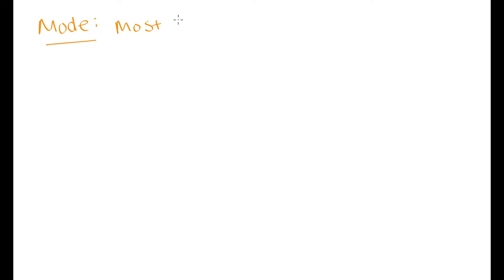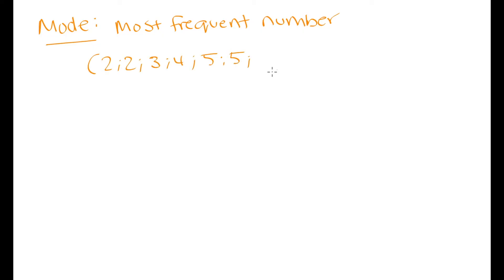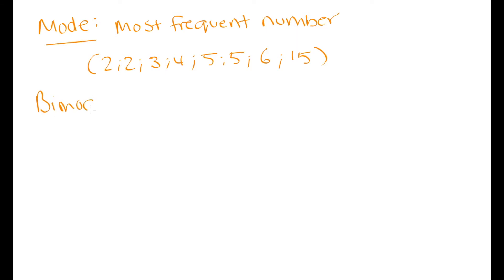The last measure of central tendency is the mode — simply the most frequently occurring number in the data set. In our data set of 2, 2, 3, 4, 5, 5, 6, and 15: 2 occurs twice, 3 once, 4 once, 5 twice, 6 once, and 15 once. So both 2 and 5 are modes — this is a bimodal data set. You can have more than one mode.